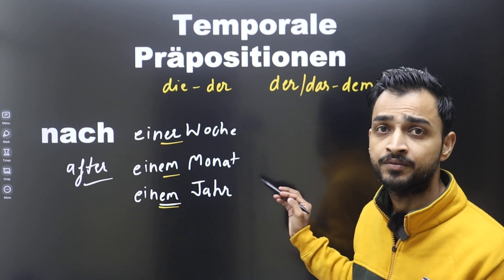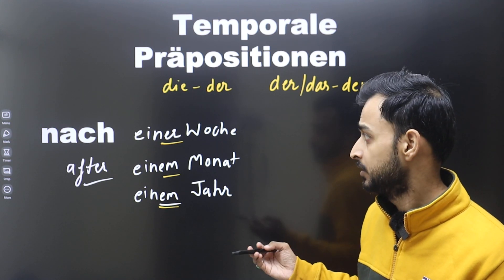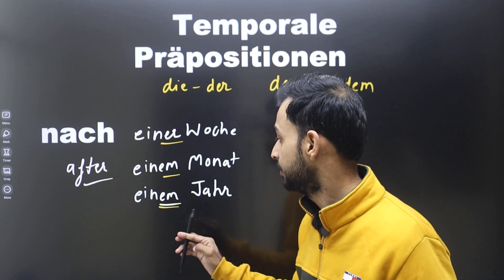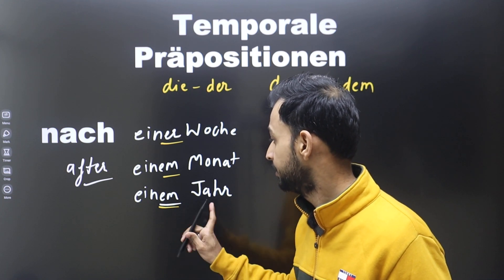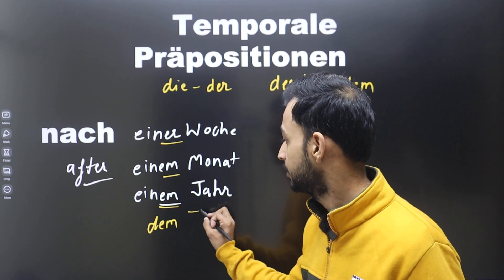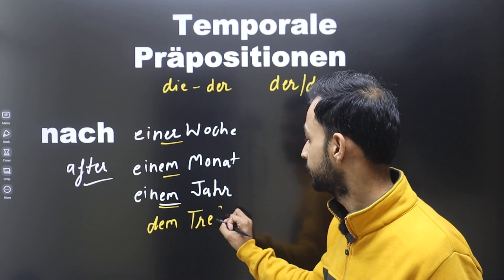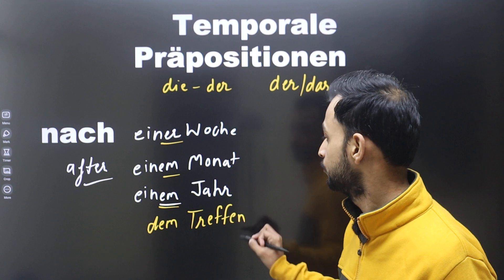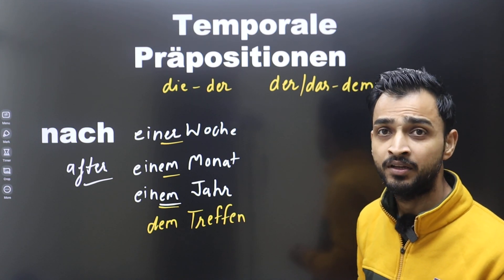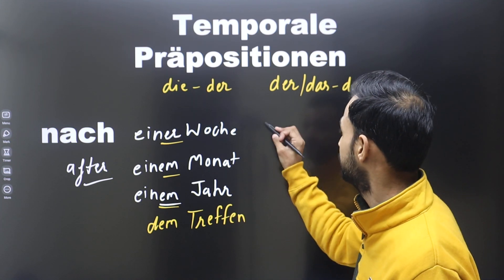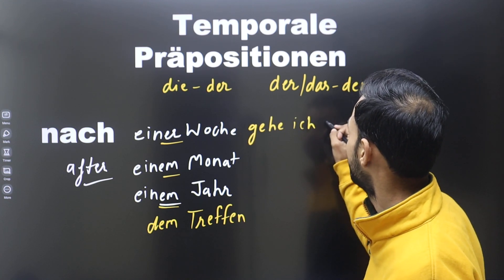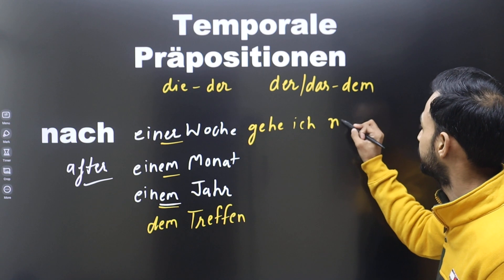After that, you write the rest of the sentence. Similarly, 'after the meeting' is 'nach dem Treffen' — because 'Treffen' is das, so 'nach dem Treffen.' For example: 'nach einer Woche gehe ich nach Paris' — after one week, I will go to Paris.